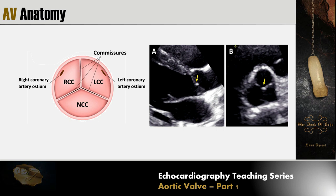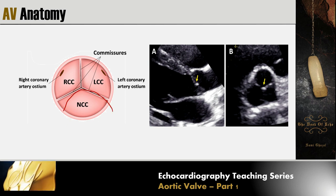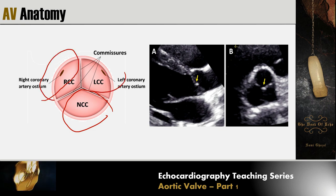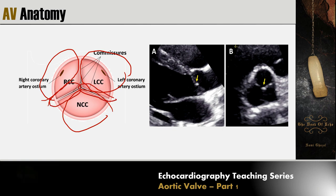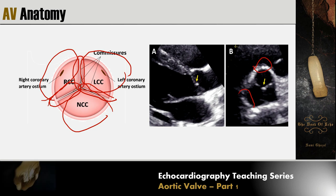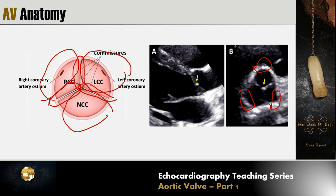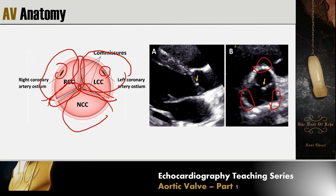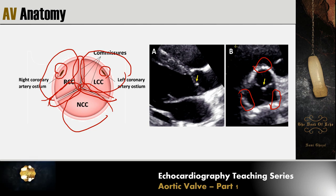The aortic valve is a complex structure with three cusps. Each cusp is separated from the others by a slit-like opening called a commissure, so we have three commissures. At the base of each cusp there is an outpouching called the sinus of Valsalva, giving us three sinuses. Two of those sinuses have the ostium of a coronary artery. The left coronary artery ostium is found in the left coronary sinus of Valsalva, and the right coronary ostium is found in the right coronary sinus of Valsalva. Accordingly, we have the left coronary cusp, which is in front of the left coronary sinus of Valsalva.